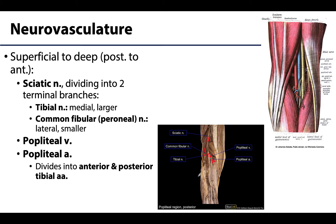Right at the border of the popliteal fossa, the popliteal artery will divide into its terminal branches: the anterior and posterior tibial arteries. These will supply the anterior and posterior compartments of the leg. The anterior tibial artery will dive over the interosseous membrane to supply the anterior compartment, and the posterior tibial artery will supply the posterior compartment.